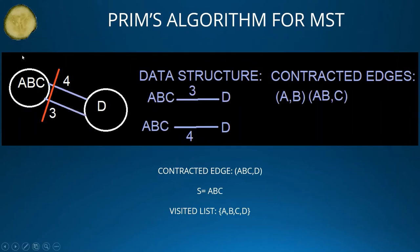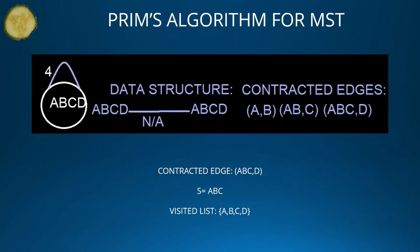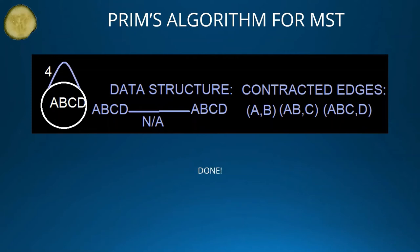Now we have the following graph. This time, we contract ABC-to-D, the edge with weight 3, and we get this graph. As you can see, we now have self-edges, but they are no longer relevant because we have contracted all vertices to one vertex. Done. In order to restore the minimum spanning tree, we restore the graph from the contracted edges. And done.